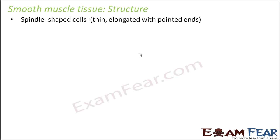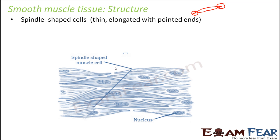Let us quickly look at their structure. They are spindle-shaped cells — spindle meaning elongated with pointed ends. Here you can see each cell is in the shape of a spindle. This is one particular muscle cell for a smooth muscle. They are uninucleate, that is one cell has one nucleus. So each spindle-shaped cell has just one nucleus — they are uninucleate cells.